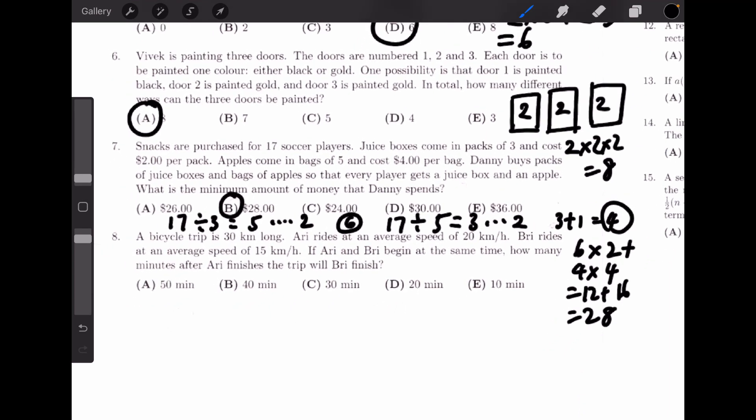Question 8. A bicycle trip is 30 kilometers long. Ari rides at an average speed of 20 kilometers per hour. Brie rides at an average speed of 15 kilometers per hour. If Ari and Brie begin at the same time, how many minutes after Ari finishes the trip will Brie finish? Because we know the distance and speed for each person, we can calculate the time needed for each person to finish the trip.